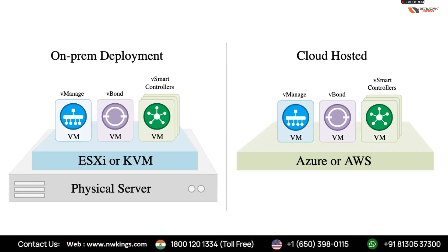There are two deployment models. In on-premises deployment, we manage vManage, vBond, and vSmart ourselves — they are virtual images. We are responsible for configuration, certificates, maintenance, upgrades, and backup. The customer deploying on-prem is solely responsible for everything.